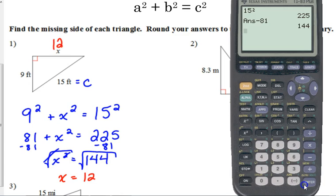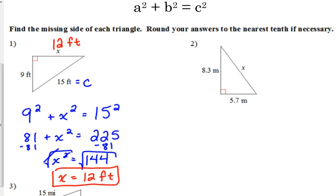That's the missing side. They gave us units, so put units with it. 12 feet. So if you want to label it on the triangle, you just want to put it at the bottom of your work. Doesn't matter, just so that I can see the X equals 12 feet.